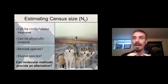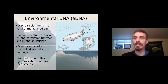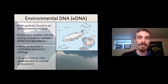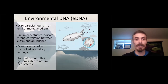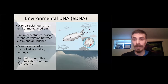This has led a lot of people to look towards molecular methods to provide a potential alternative to traditional survey methods. One thing that's emerged in the molecular ecologist's toolbox that shows potential for addressing this question is environmental DNA, or eDNA. eDNA refers to DNA particles found in an environmental medium.